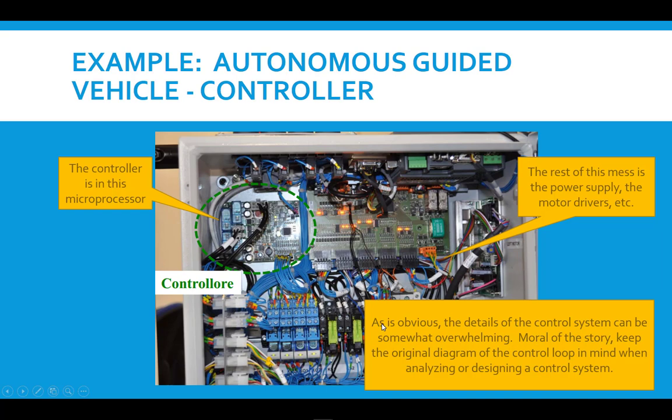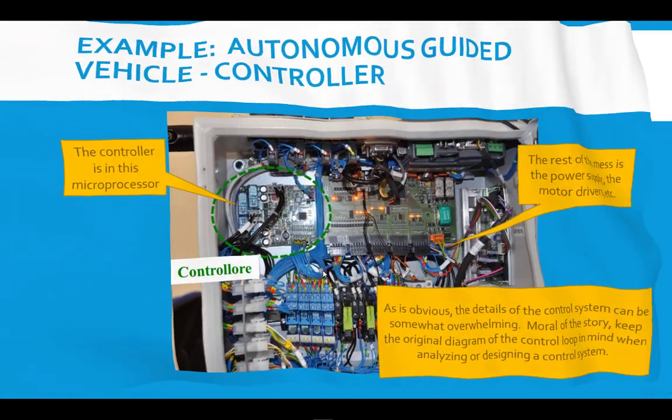So I've made this point before, but let me make it again because it's very important. Control systems have lots of details, as you can see with this control cabinet shown here. And the moral of the story is really to keep that original diagram in mind when you're analyzing or designing a control system so that you are aware of that basic structure that is common to all control systems.